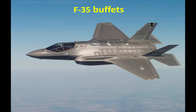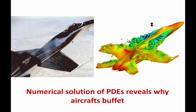So why do airplanes buffet? Here is a comparison between a flight test and a numerical solution of partial differential equations. What you see is that the vortex shedding from the leading edge is initially very coherent and regular — it rolls like a string, then bursts and becomes irregular. You then have a lot of incoherent vortices that pass right over the vertical tail, and those vortices shake the vertical tail, which makes the airplane shake.